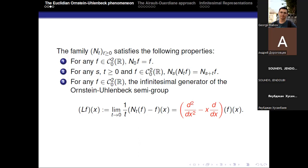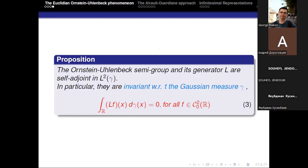Our aim is to study and give a geometric meaning to this operator on some complex domain of C^n. One of the main important properties of the Ornstein-Uhlenbeck operator is that it is symmetric with respect to the Gaussian measure — that is, the integral of Lf(x) multiplied by g(x) dγ equals the integral of f(x) g(x) dx. For g equal to 1, the averaging property implies this invariance property for all C² functions vanishing at infinity.